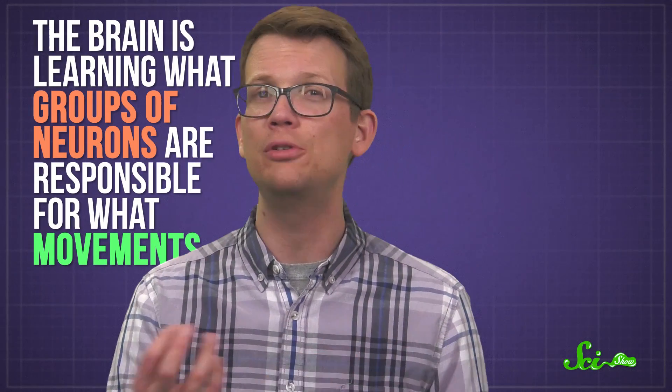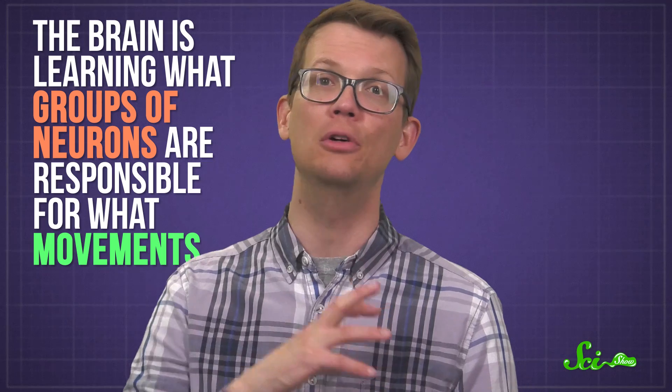The brain is learning what groups of neurons are responsible for what movements. It's essentially the equivalent of learning to control a Jaeger by flailing your arms around and seeing what happens. It doesn't end there, though.